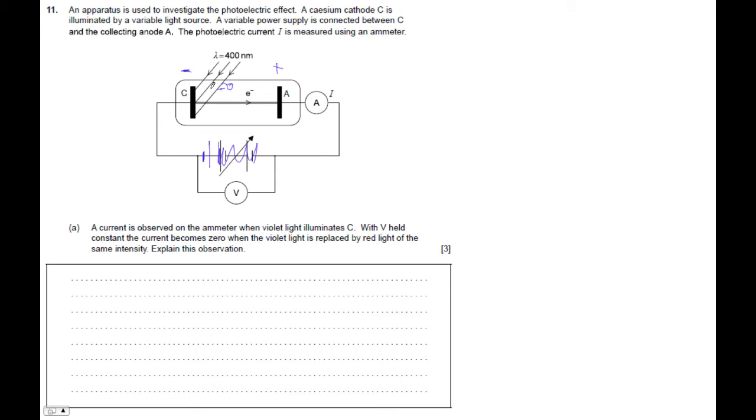So the photon's energy is going to come in. You have to subtract the work function. And then you have to add the 2.50 electron volts. Yeah, I mean, it's actually an ingenious question.